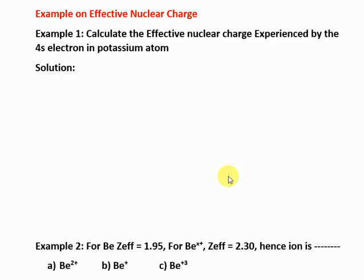Good morning, dear students. Today we will see examples on effective nuclear charge as per Slater's rule. The first example is to calculate the effective nuclear charge experienced by the outermost electron in the potassium atom. The second example involves beryllium: Z_eff = 1.95 for neutral beryllium, and Z_eff = 2.30 for a beryllium ion. Options are beryllium 2+, beryllium+, or beryllium 3+.